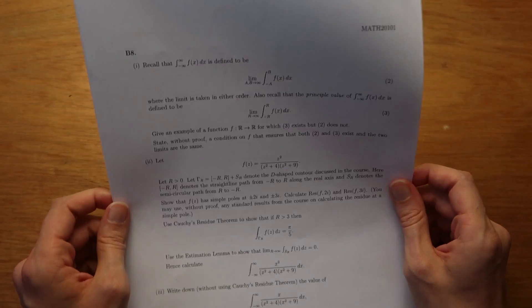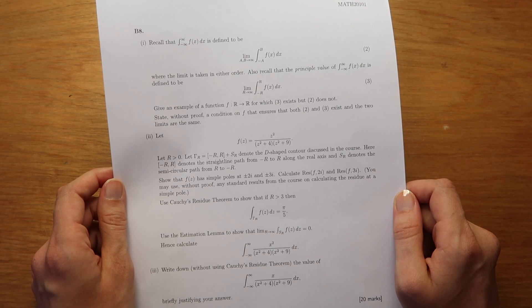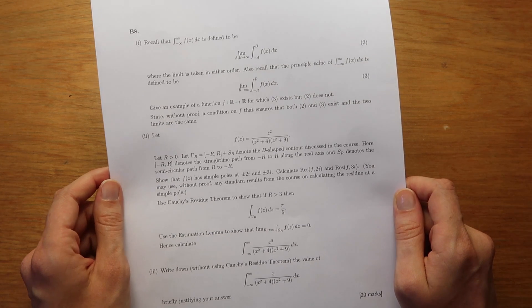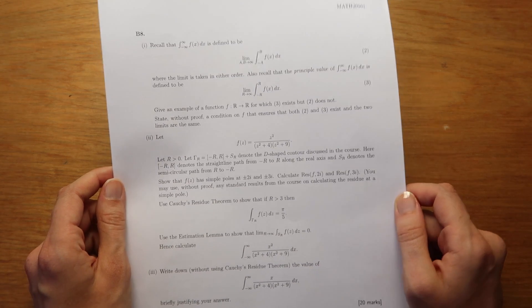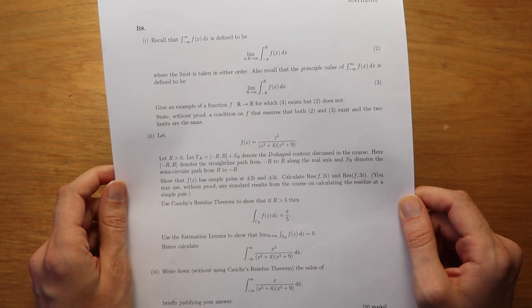And the last one is a similar vein. This is using residue theorem which again allows you to carry out integrations in the complex space that otherwise would have been quite difficult just in real space.